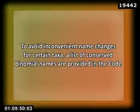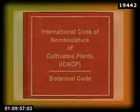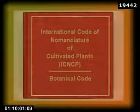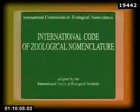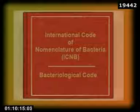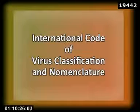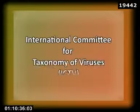To avoid inconvenient name changes for certain taxa, a list of conserved binomial names is provided in the Code. Cultivated plants are governed by the International Code of Nomenclature of Cultivated Plants, largely based on the botanical code in a slightly modified form. Names of animals are governed by the International Code of Zoological Nomenclature. A separate code for viruses, the International Code of Virus Classification and Nomenclature, has been developed from the most recent rules by the International Committee for the Taxonomy of Viruses.